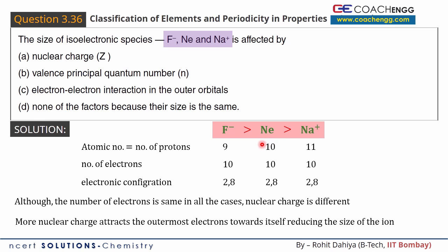So from here we have seen the trend and realized that the size of isoelectronic species depends on the nuclear charge. So option A is our required answer. Thank you so much for watching this video.